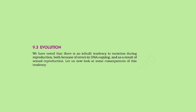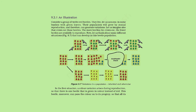9.3 Evolution. There is an inbuilt tendency to variation during reproduction, both because of errors in DNA copying and as a result of sexual reproduction. 9.3.1 An Illustration: Consider a group of 12 red beetles living in bushes with green leaves. Their population will grow by sexual reproduction and therefore can generate variations. Crows eat these beetles — the more beetles the crows eat, the fewer are available to reproduce. Let us think about some different situations that can develop in this beetle population.